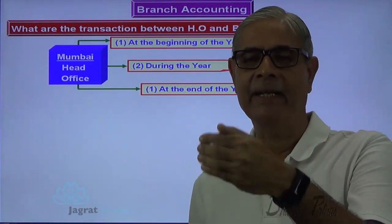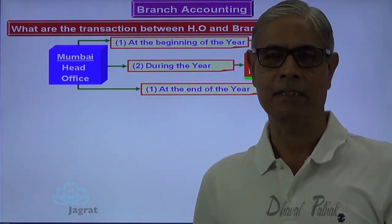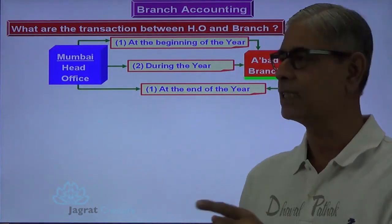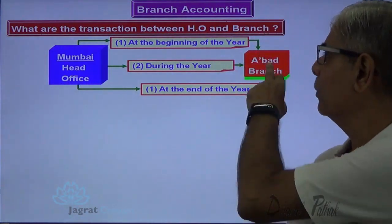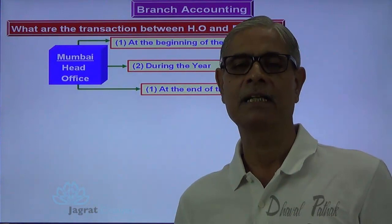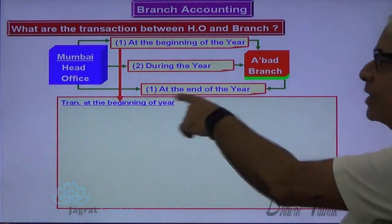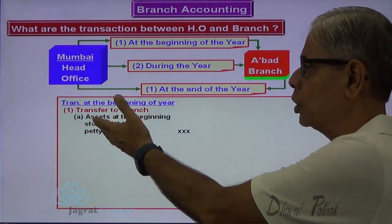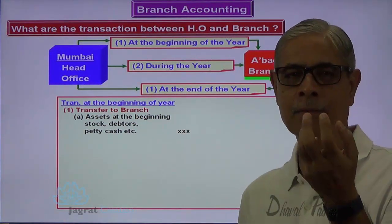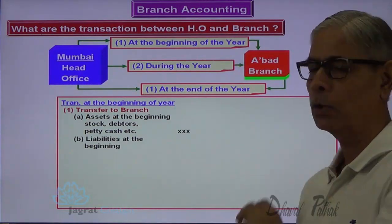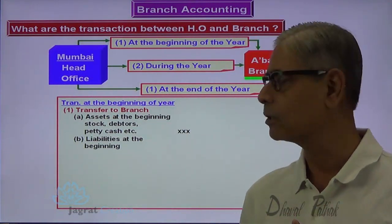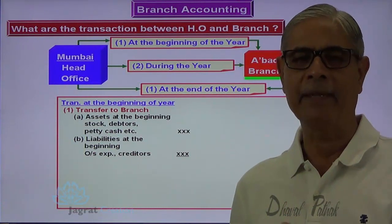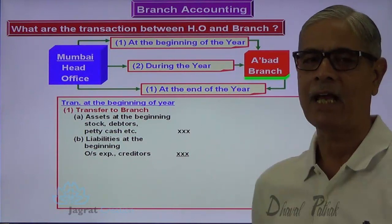At the beginning of the year, the accounting entity branch is created — that is not done in stock and data system. At the end of the year, the accounting entity branch is absorbed by HO — that is also not done in stock and data system. In data system, the accounting entity is created by giving it assets and liabilities, and absorbed by taking away assets and liabilities at the end of the year. At the beginning of the year, assets transferred to the branch include: stock, debtors, petty cash, etc. Liabilities are also given to the branch — branch creditors, outstanding expenses — this is how branch comes into existence as an economic entity.